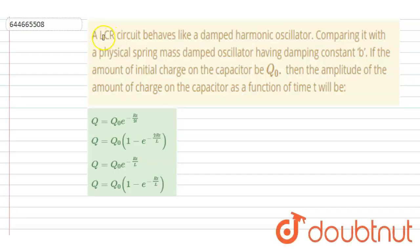Hello everyone. A LCR circuit behaves as a damped harmonic oscillator. Comparing it with a physical spring mass damped oscillator with damping constant B, if the amount of initial charge on the capacitor is Q0, then the amplitude of the amount of charge on the capacitor as a function of time.